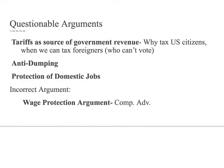The anti-dumping argument is somewhat questionable. Dumping is when a producer sells goods well below what it costs to make them to gain access to a foreign market. For example, a cell phone costs $250 to produce — with excess inventory, a company might sell it to Danish consumers for $50 each to get a foothold in that market. This creates some argument for protection against dumping.